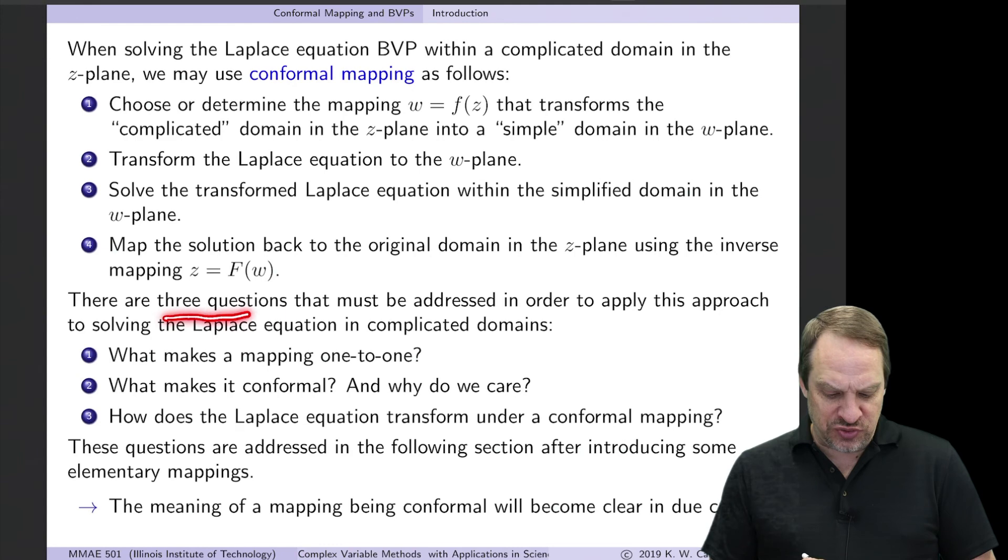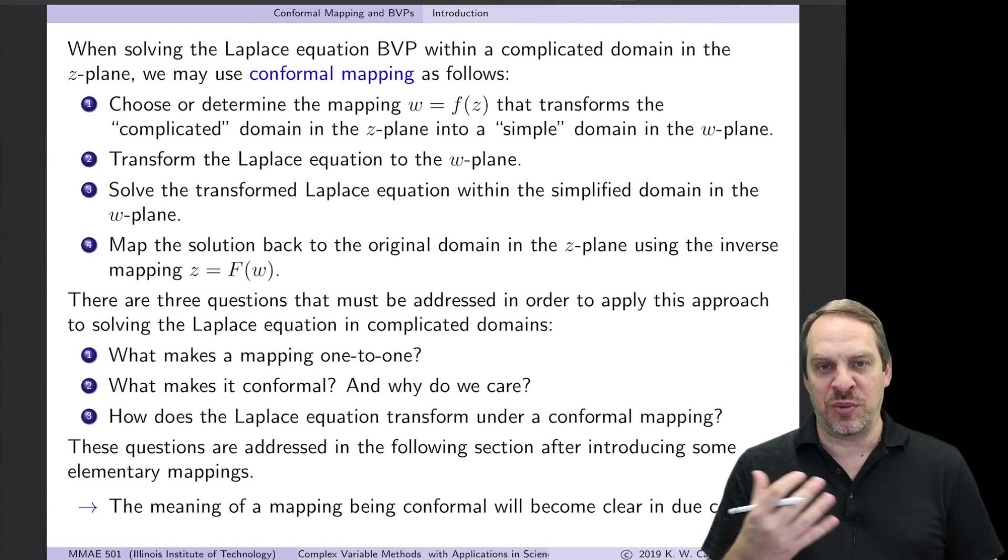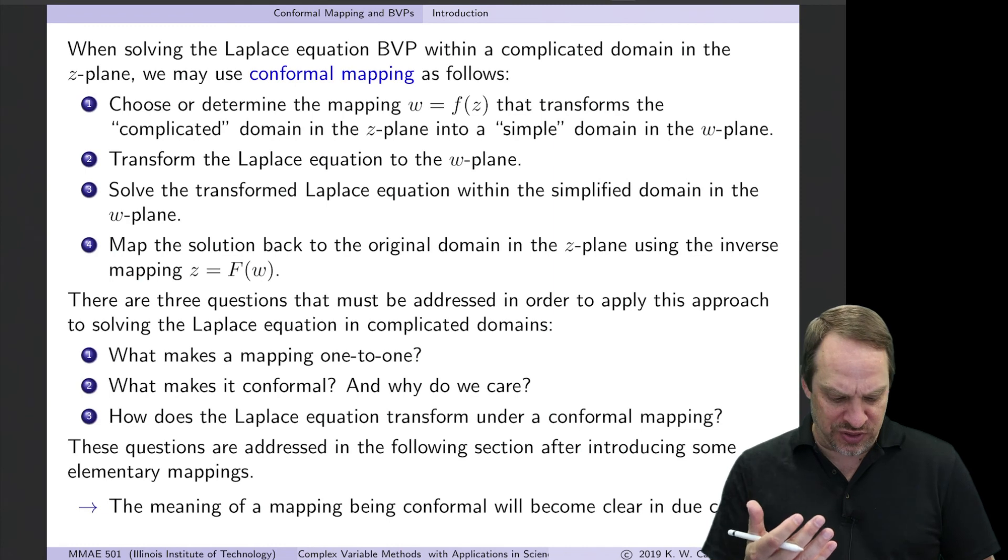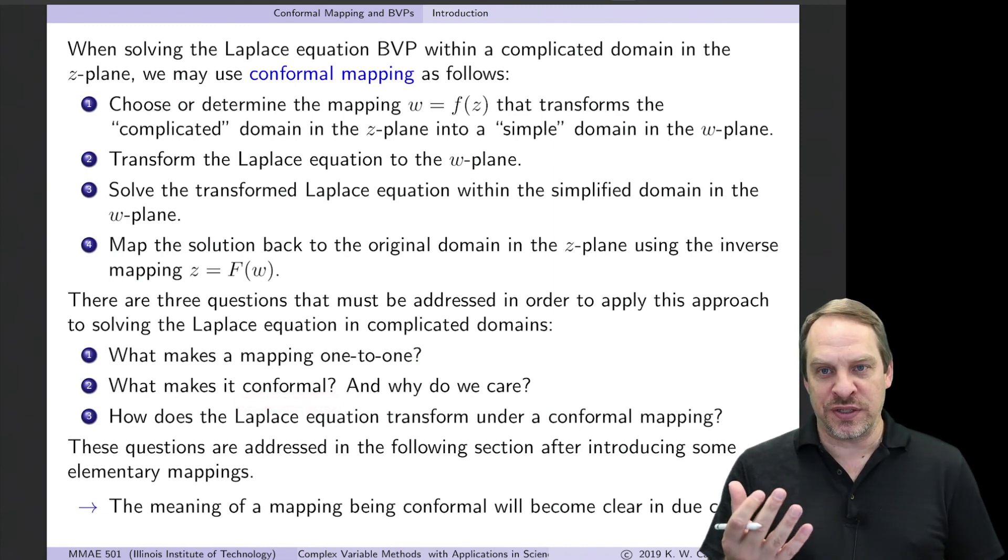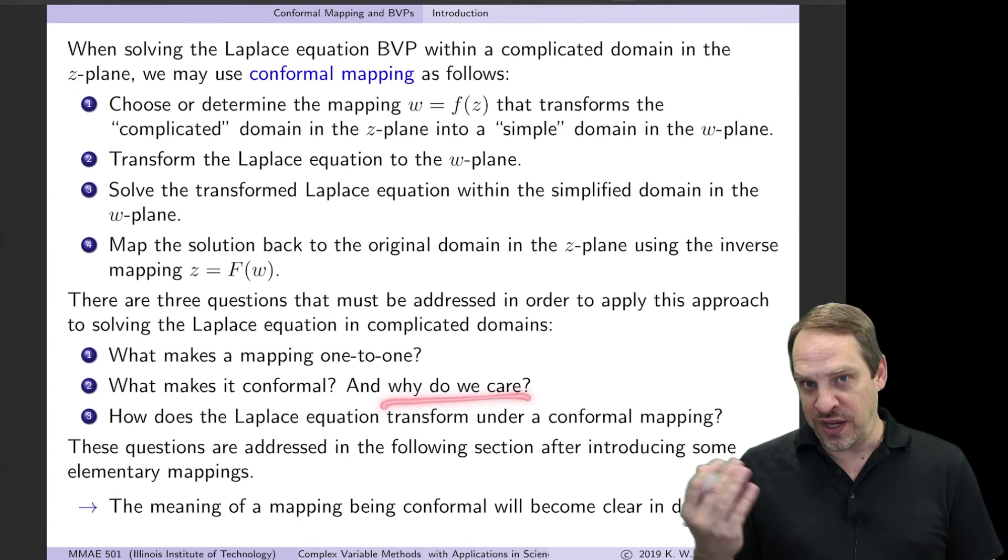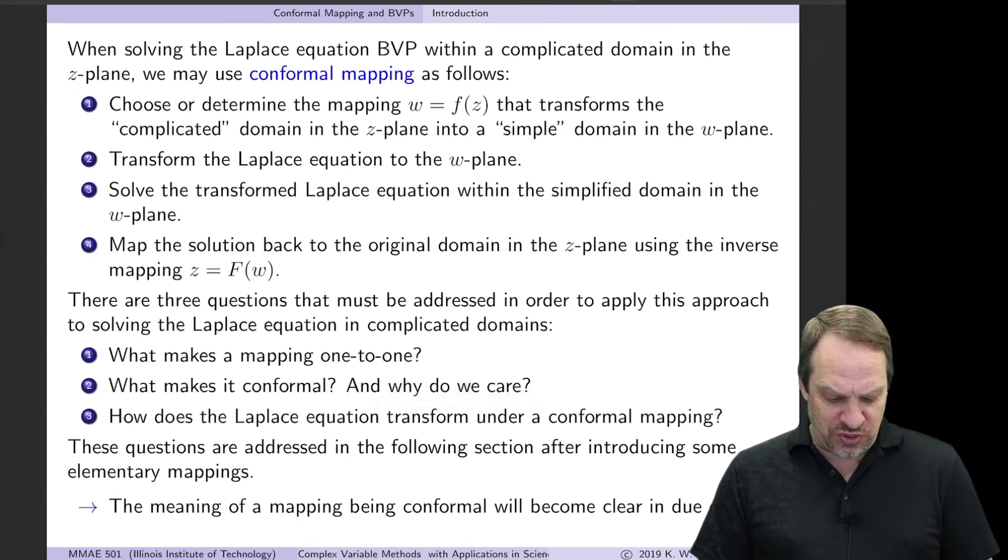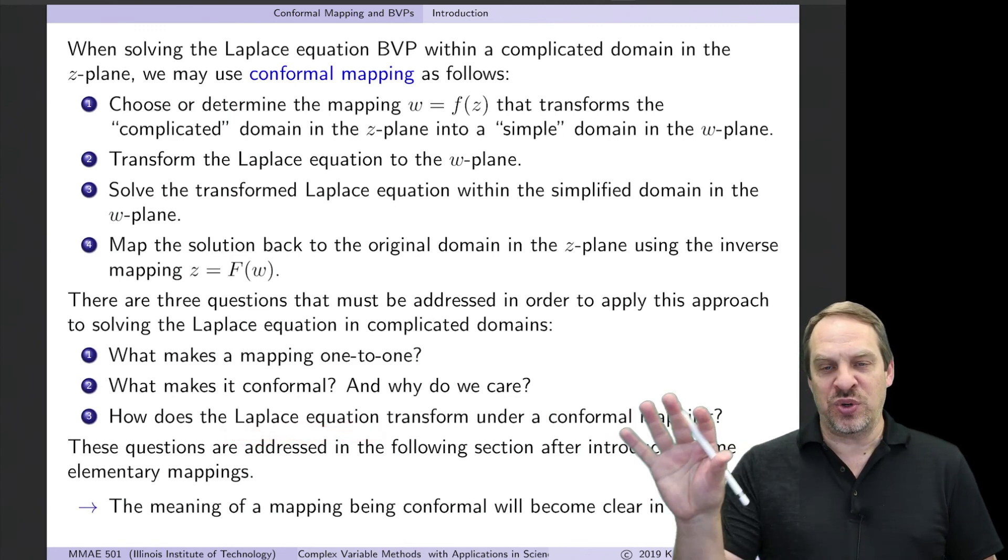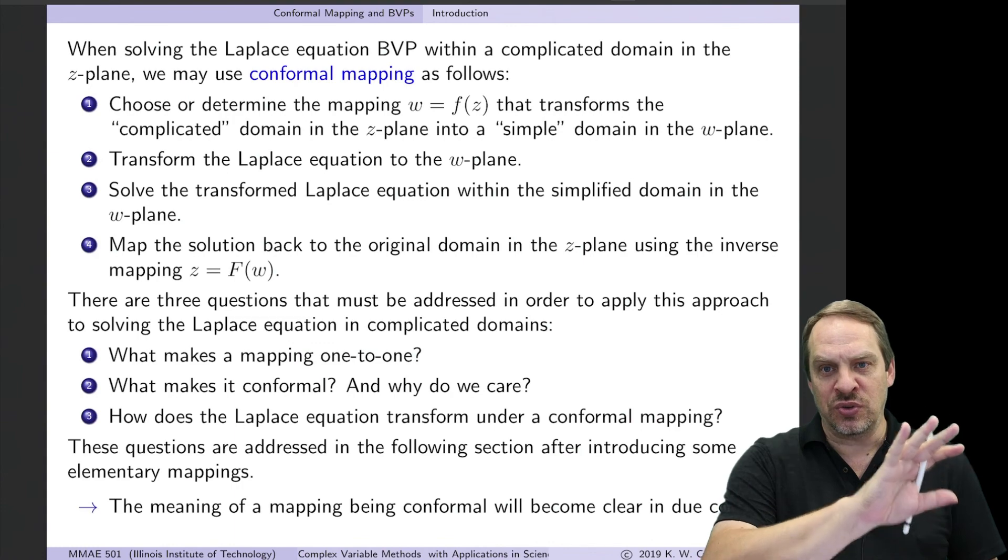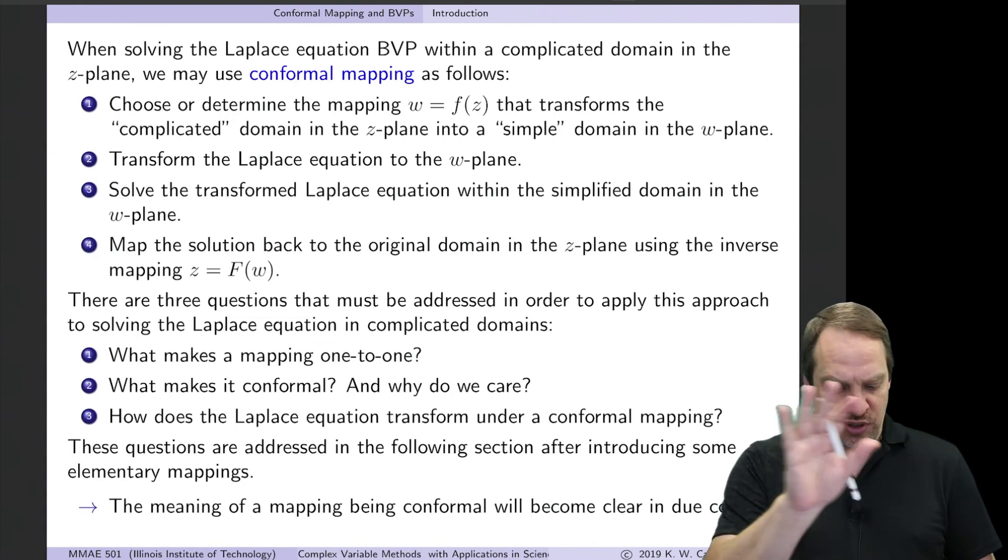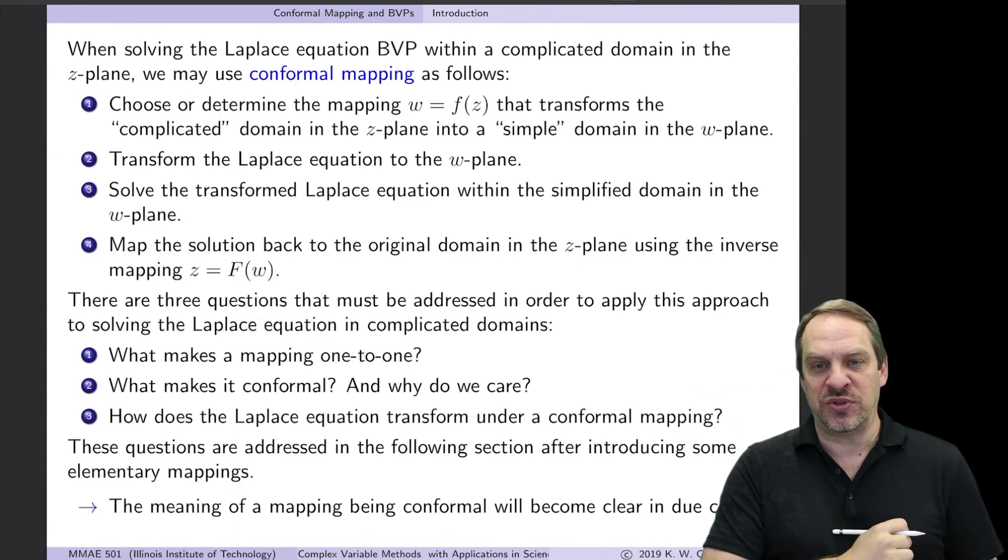There are three questions that we need to address in order to do this. The first is, what makes a mapping one-to-one? It's intuitively clear that that's a desirable quality, but how do we know whether a mapping is one-to-one? Also, what does it mean for a mapping to be conformal? That's the title of the chapter. What does that mean, and why do we even care that it's conformal? Also, we need to address this question of, what does Laplace's equation in the z-plane transform into in the w-plane? We'll look at all three of these questions in subsequent videos.